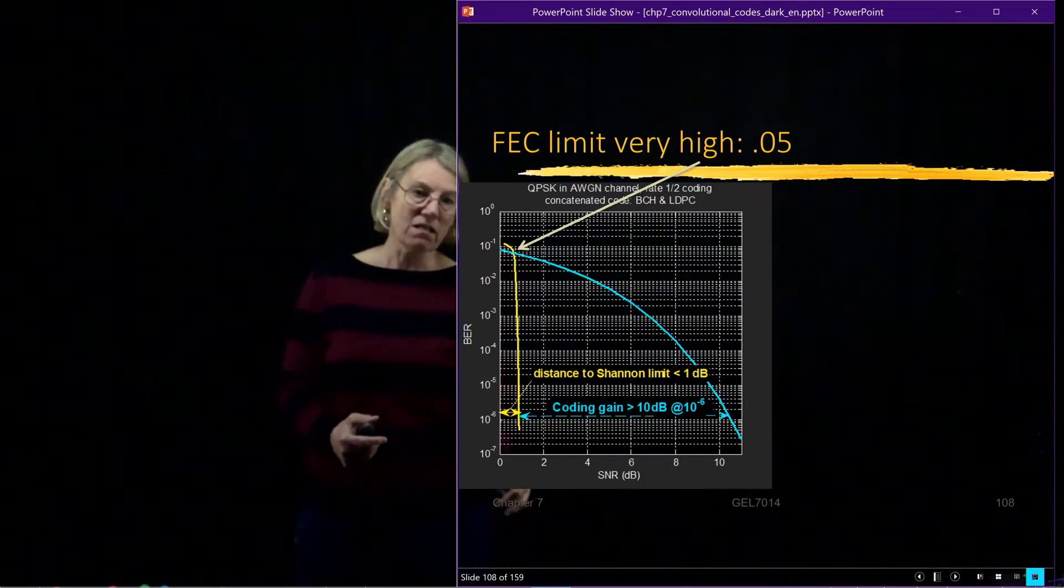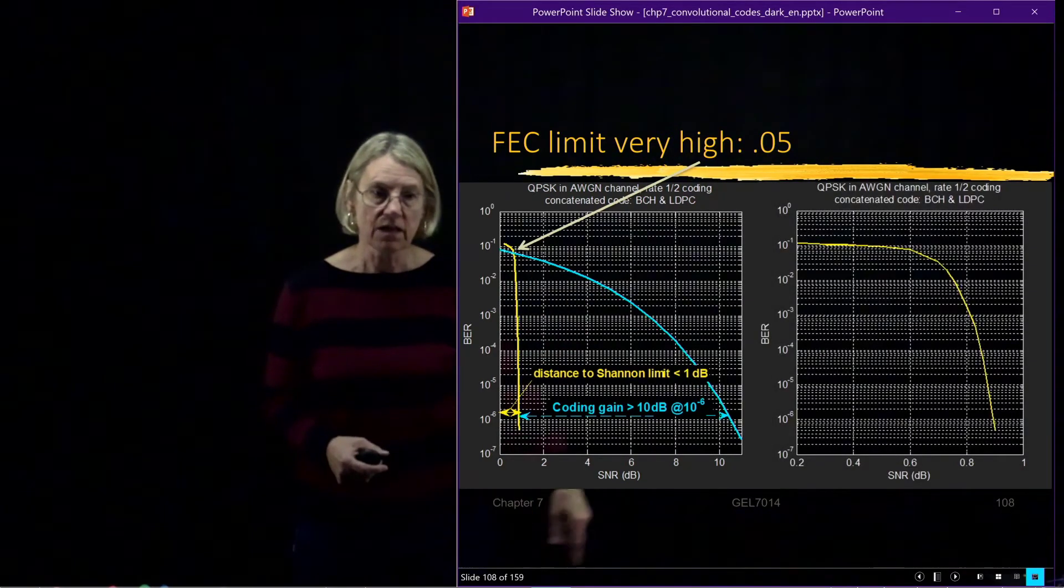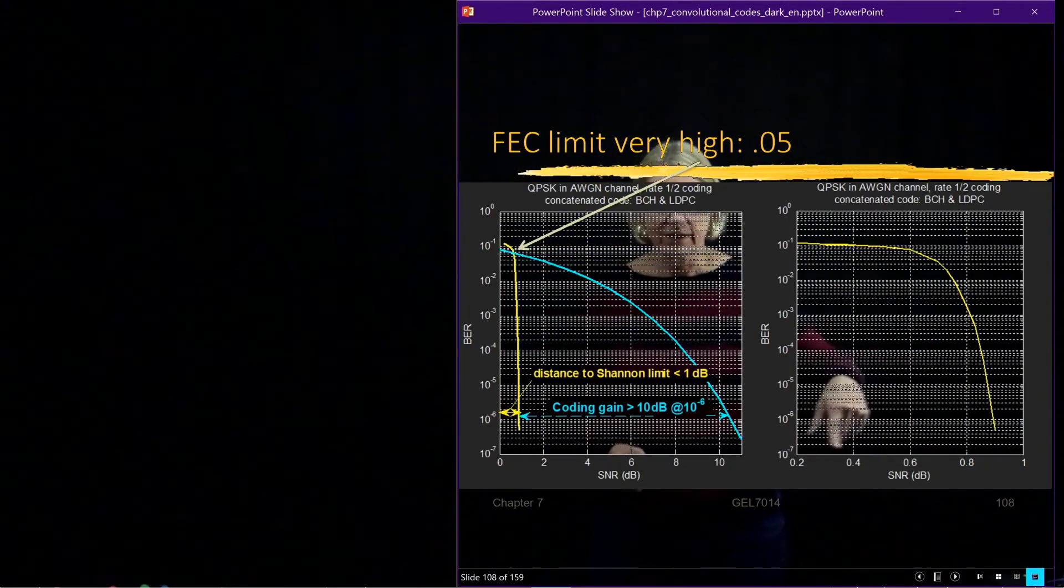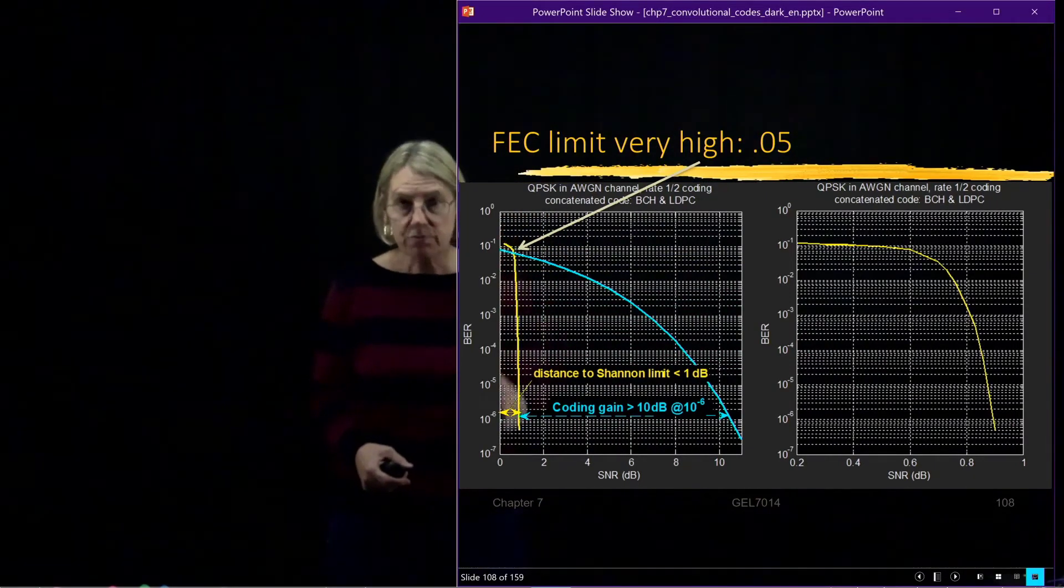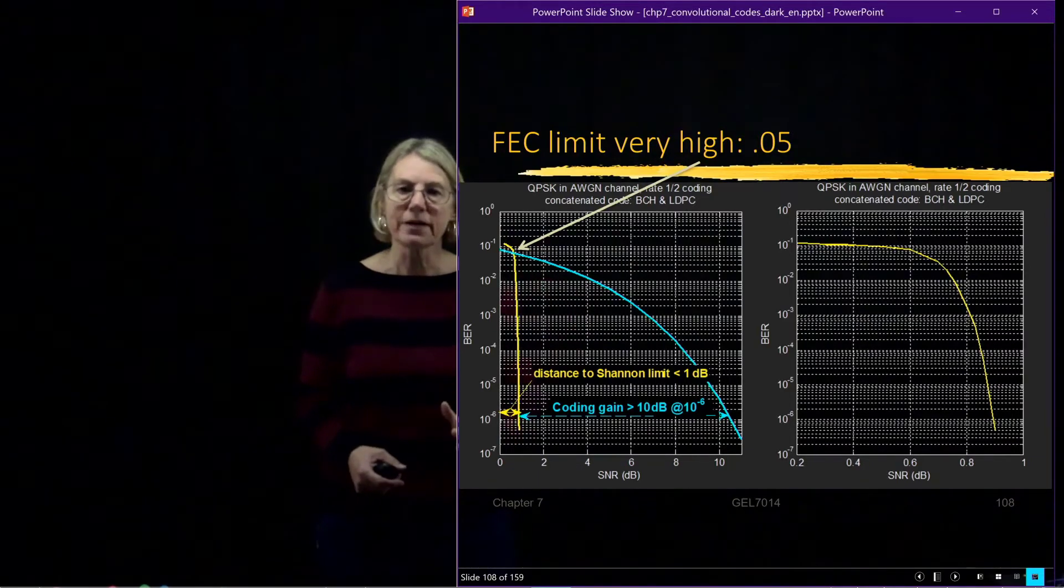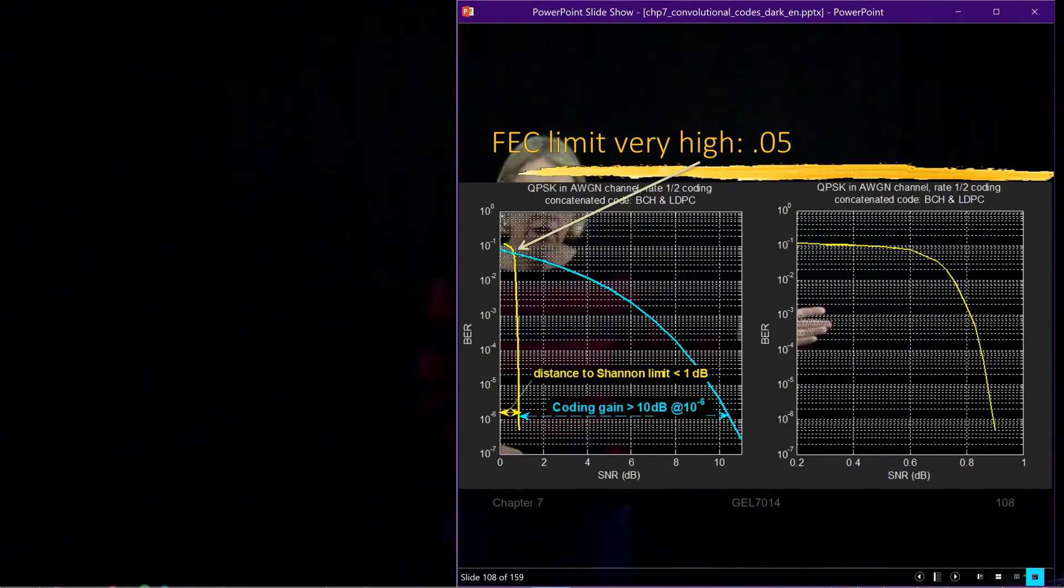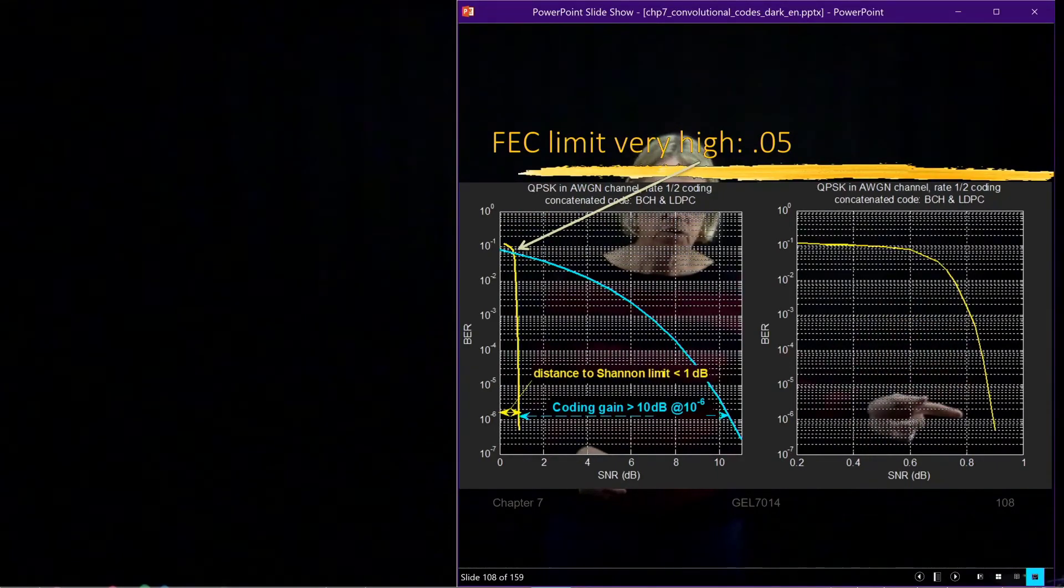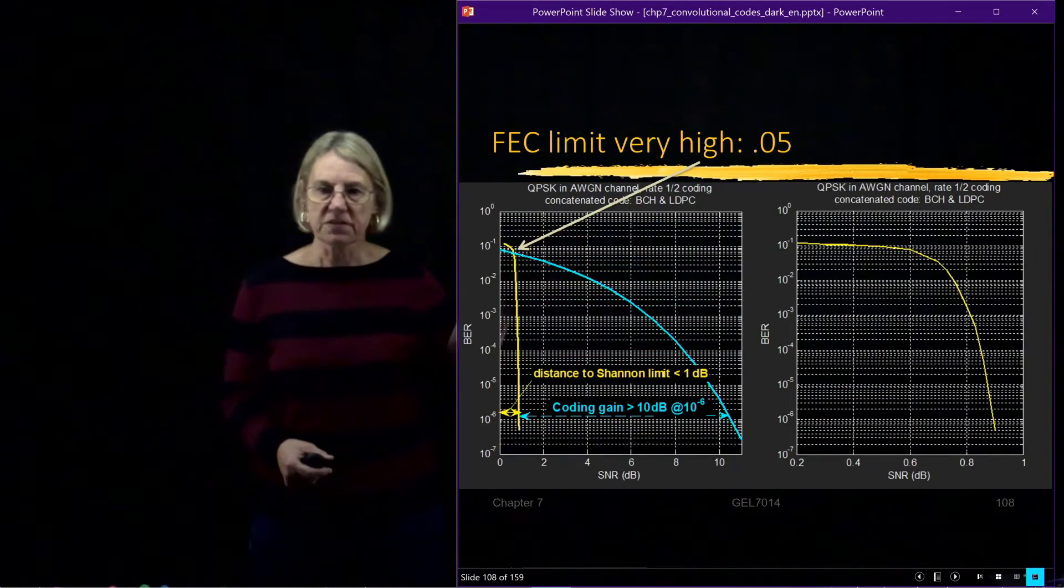You can see how sharp that is. This is the scale where I see the typical uncoded performance. If I change the scale, now I'm looking at something very fine between 0.2 and 1. I've zoomed in at where this falloff is. Much, much steeper coded. We still have a waterfall shape, but the waterfall shape is much more steep decline with an error correcting code. As long as we're above like 0.8, we're getting very good performance from this code.